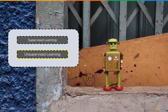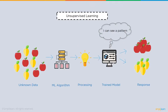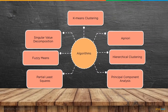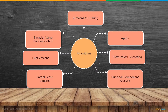In unsupervised learning, we have unknown, unlabeled data — a bunch of fruit nobody has identified. We put it through the algorithm, and the trained model finds patterns and divides them into groups — for example, apples and pears. Algorithms include K-means clustering, singular value decomposition, fuzzy means, partial least squares, a priori, hierarchical clustering, and principal component analysis.